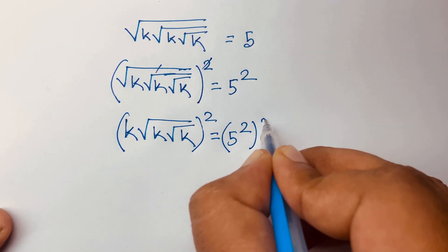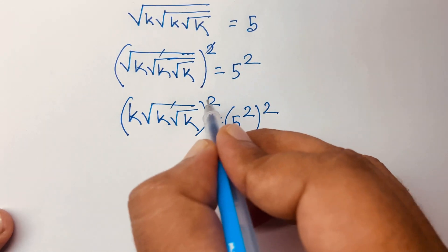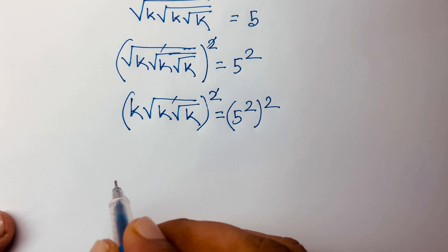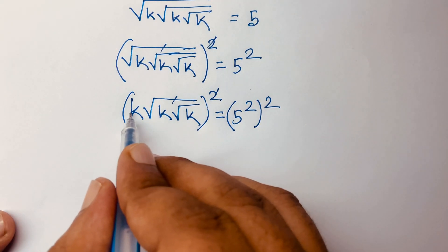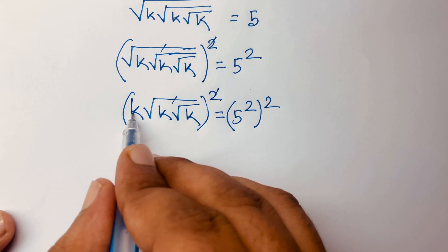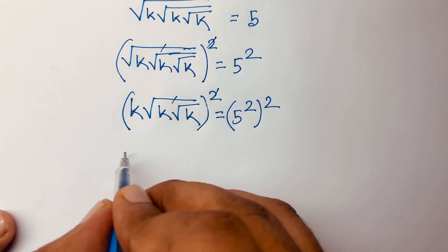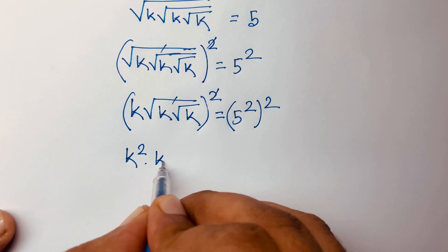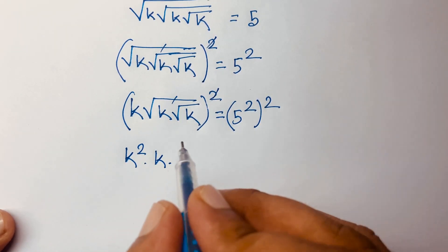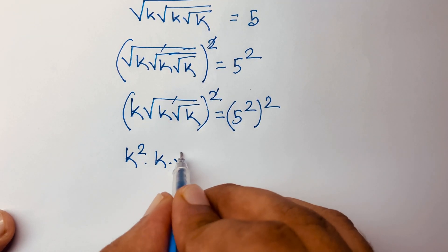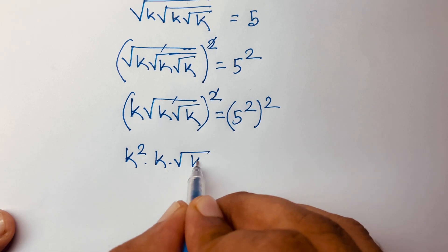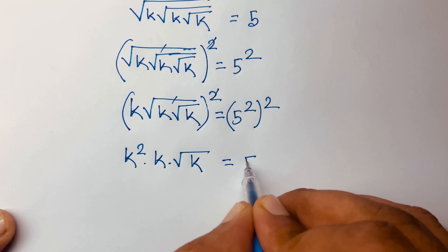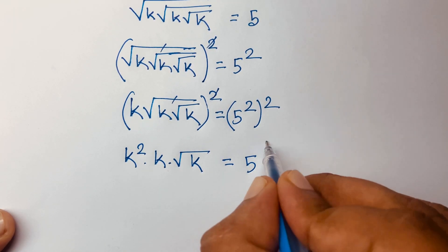The square root is cancelled again. We find out k squared times k, and here is √k = 5 to the power of 2 times 2, which is 4.